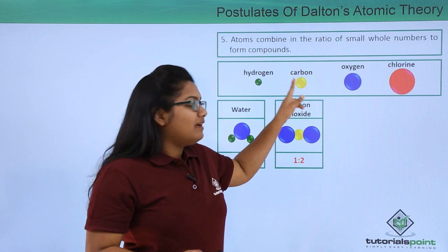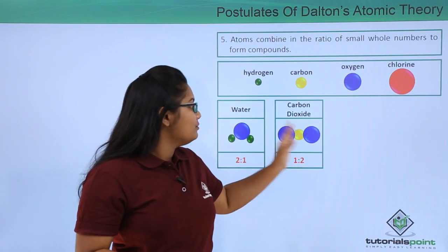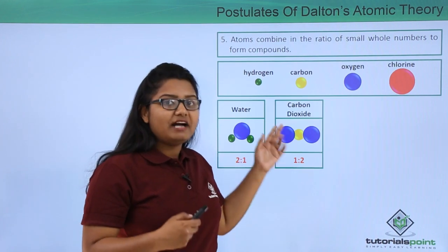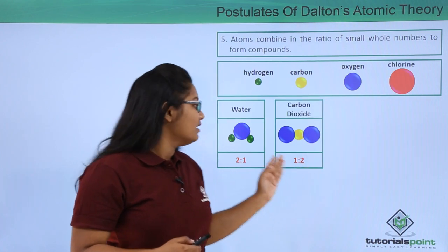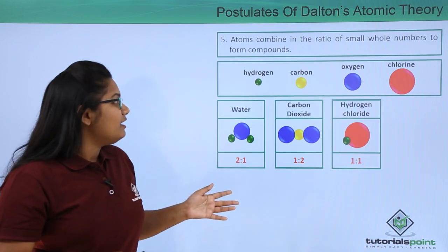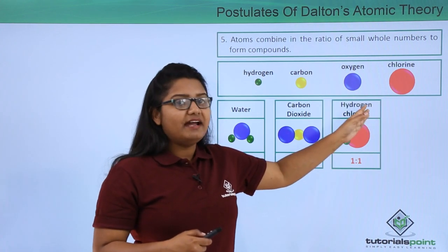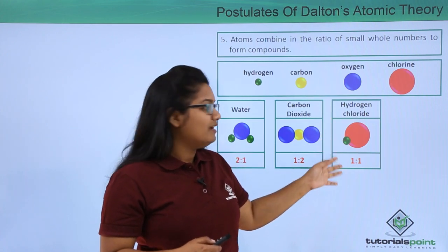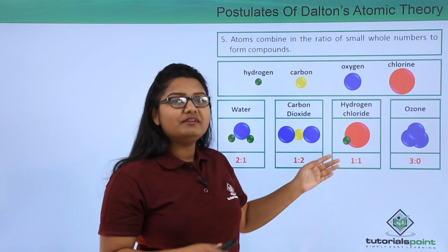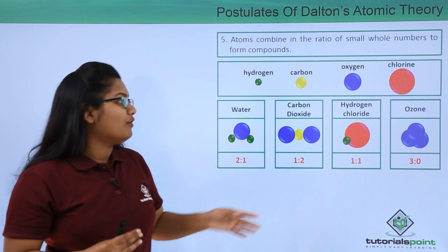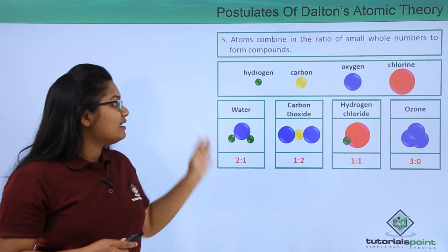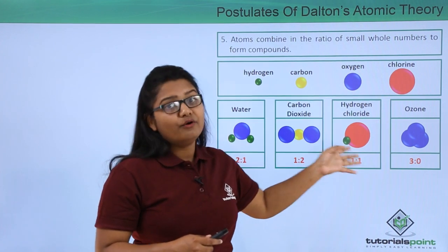Similarly, a hydrogen atom and a chlorine atom combine to form a hydrogen chloride molecule where the ratio is one to one. And for an ozone molecule, three oxygen atoms combine to form it. In all four cases, we can see that the ratios in which the atoms combine are simple small whole numbers.